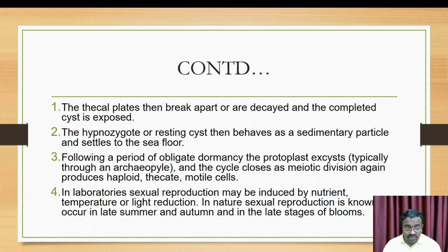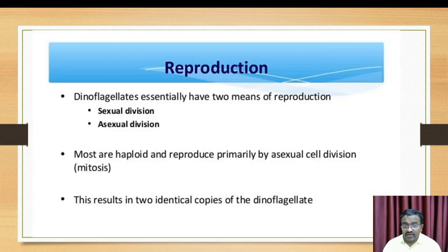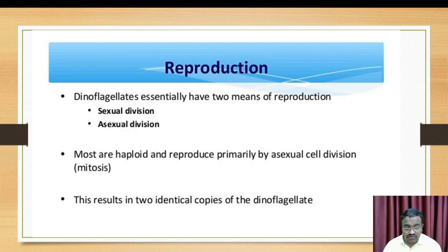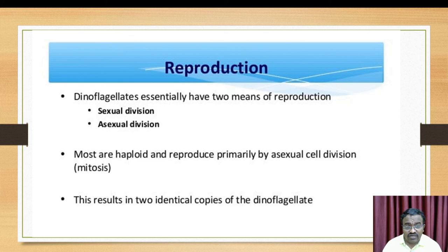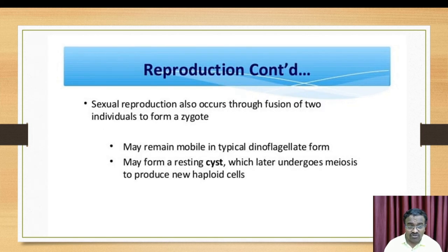Sexual reproduction can also be induced by light, temperature, or light reduction. Algal blooms and dinoflagellate blooms can be observed in oceans. The common types of reproduction are sexual and asexual reproduction.